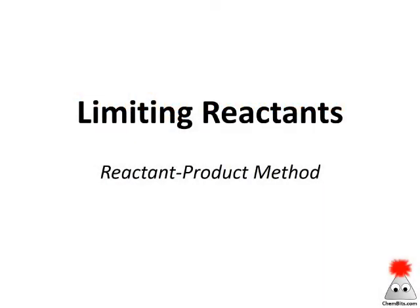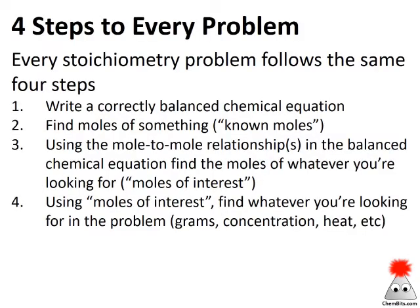One very common type of stoichiometry problem is a limiting reactant problem — that's a problem where we've got multiple reactants and we're trying to figure out which one of them is going to run out first. There are a few ways we can determine limiting reactants; this video is going to look at the reactant-product method.